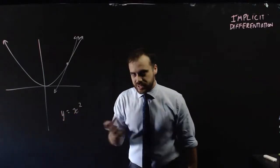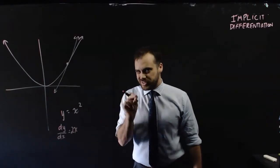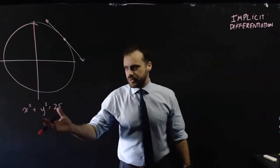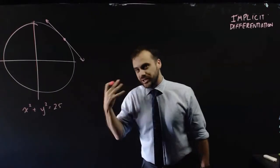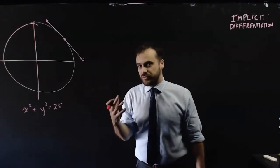Y equals x squared, the derivative equals 2x. But what if it didn't look like that? What if you had something in terms of x and y, some relation, and you wanted to find the derivative of that?